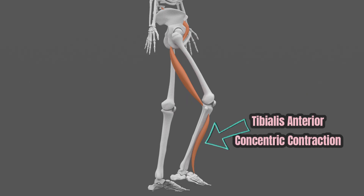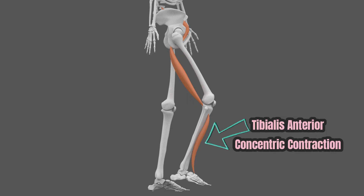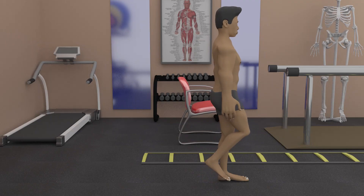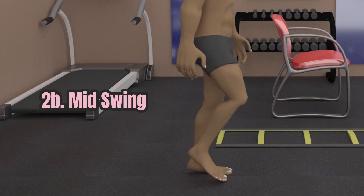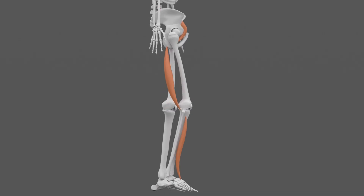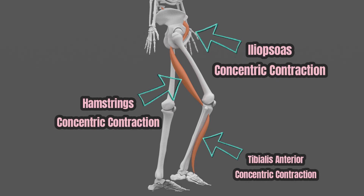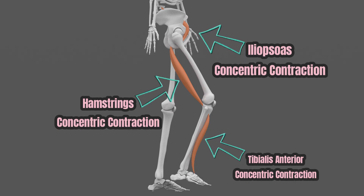While the tibialis anterior does a concentric contraction to move the ankle from a plantar flex position of the pre-swing to neutral and reduce foot drag. Then we get to the mid-swing where the thigh reaches its peak advancement. The iliopsoas, hamstrings, and tibialis anterior muscles here perform the same contraction as during initial swing to prevent foot drag.